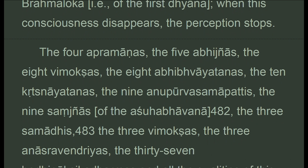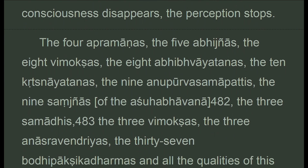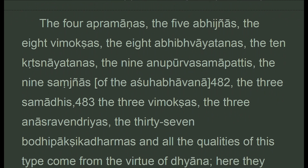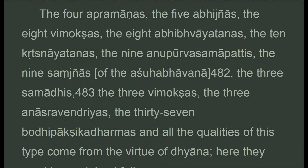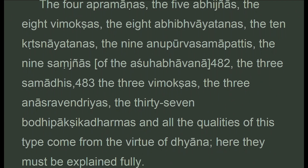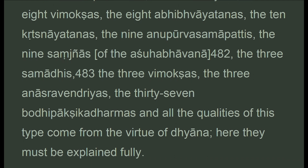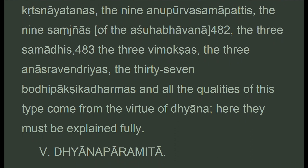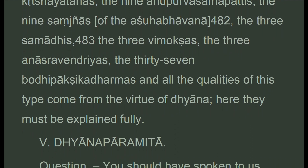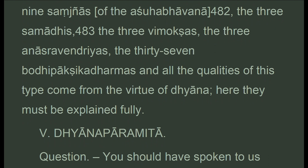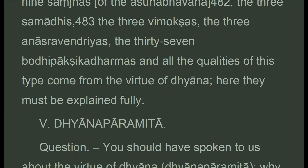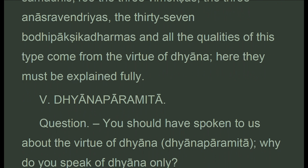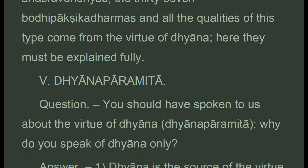The four apramanas, the five abhijnas, the eight vimoksas, the eight abhibhvayatanas, the ten krtsnayatanas, the nine anupurvasamapattis, the nine samjnas of the asubha bhavana, the three samadhis, the three vimoksas, the three anasravendriyas, the 37 bodhipaksha dharmas, and all qualities of this type come from the virtue of dhyana — and here they must be explained fully.